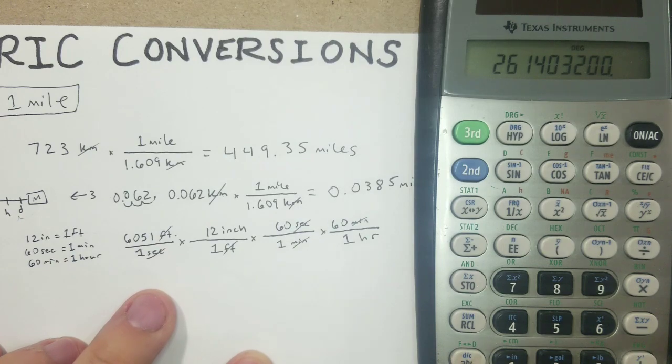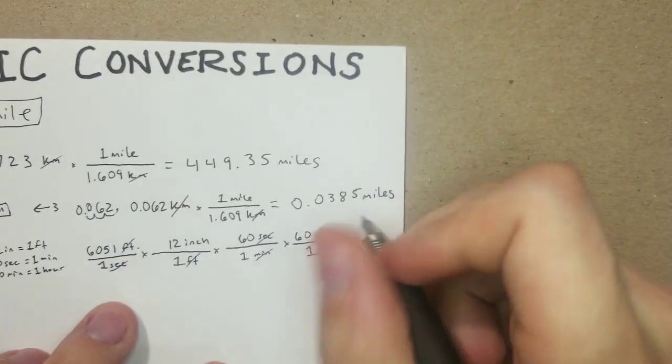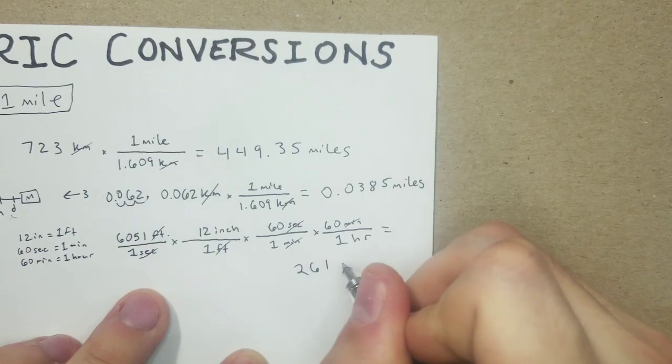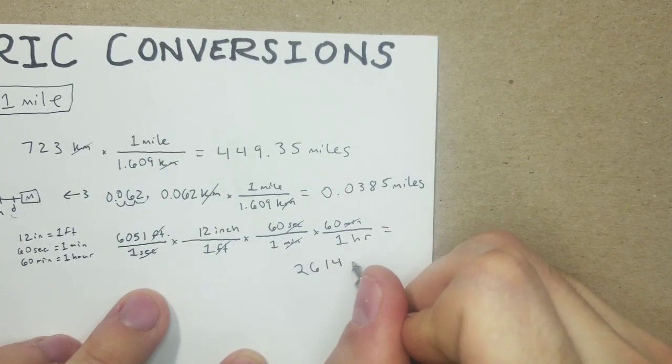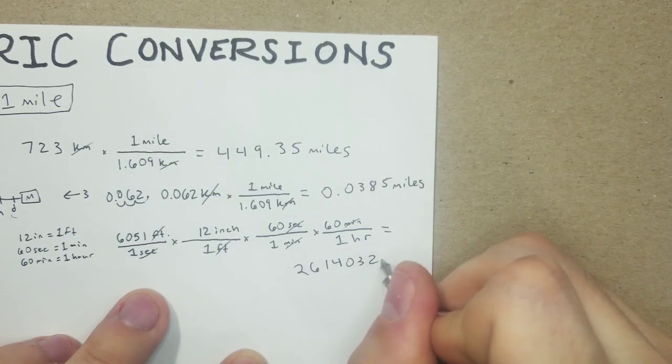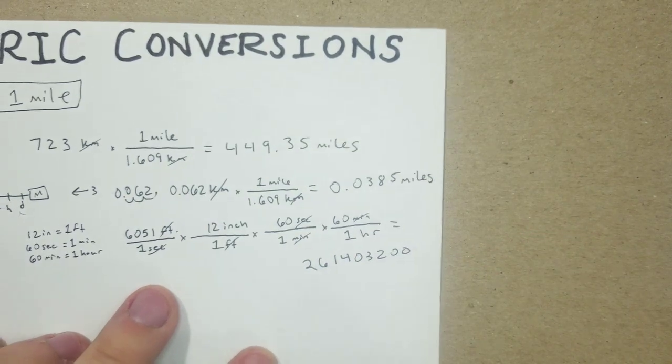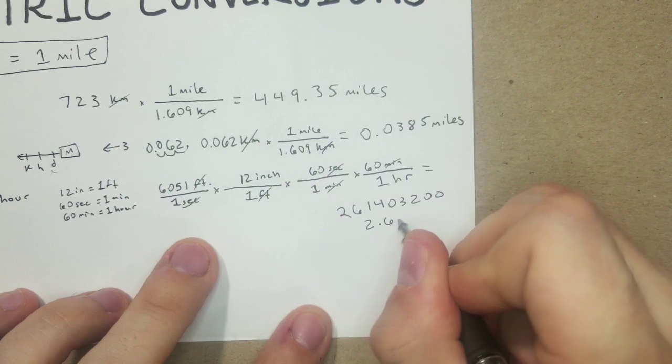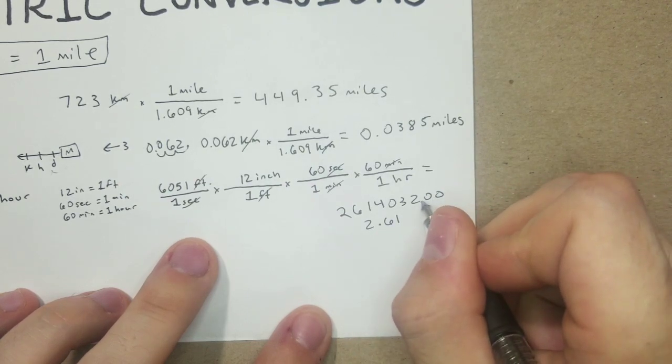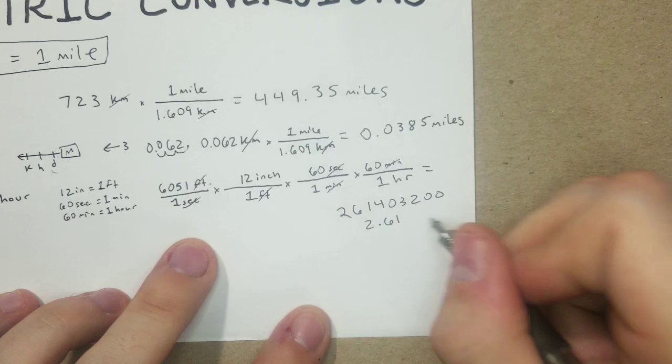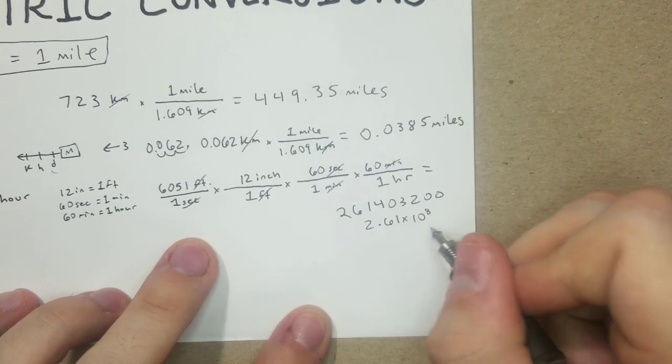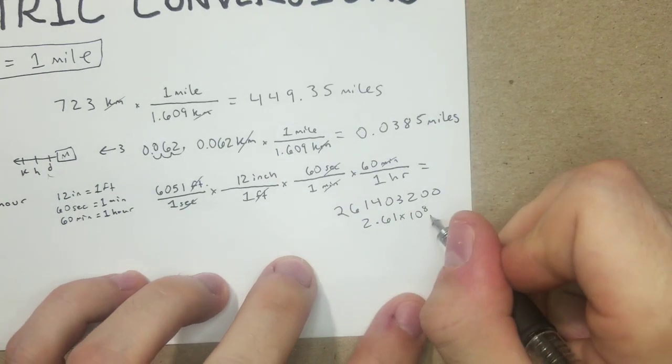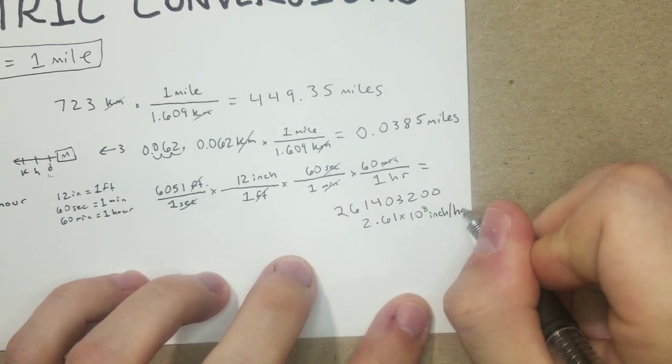Put it down below: 261,403,200. And you can throw that into scientific notation right quick: 2.614032 times 10 to the 8th. And that's going to be inches per hour.